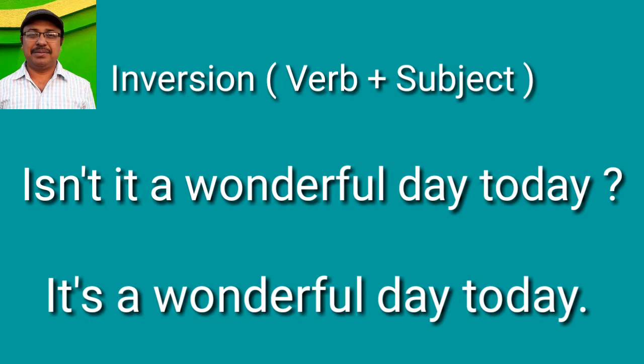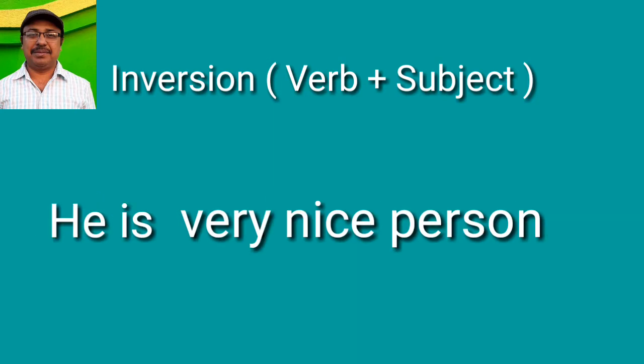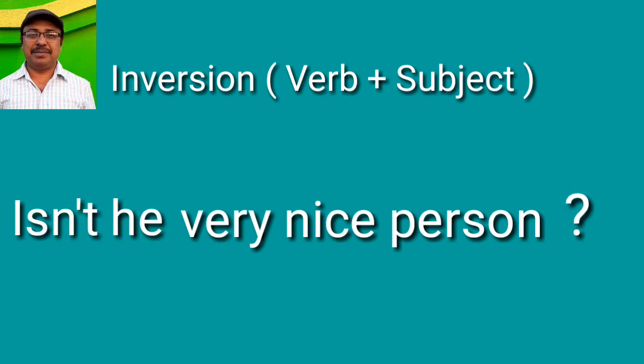Now you try yourself. 'It is very cold outside today' — how can you say this differently? Yes, you are right. You can say: 'Isn't it very cold outside today?' Try again. 'He is a very nice person' — how can you say this sentence? 'Isn't he a very nice person?'